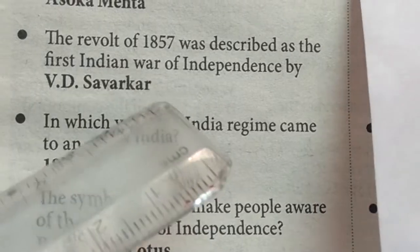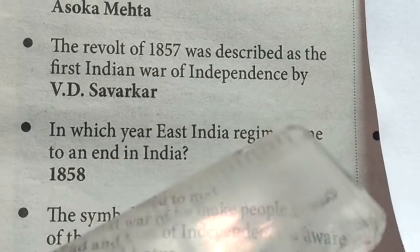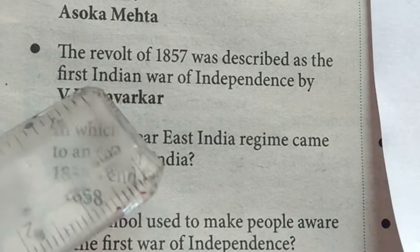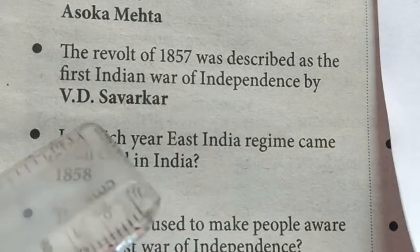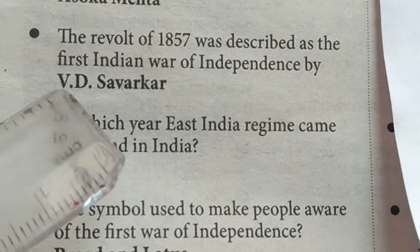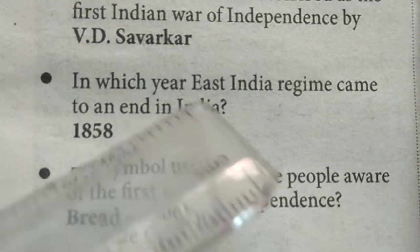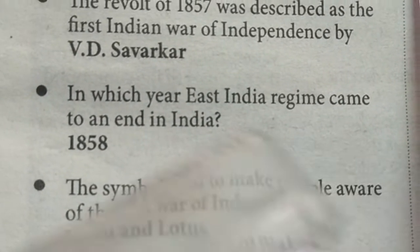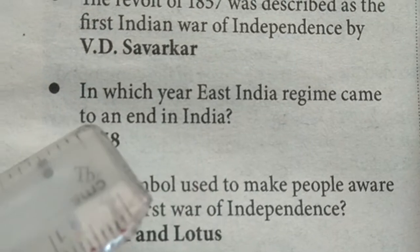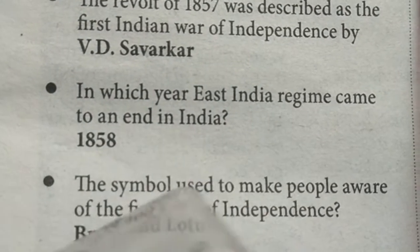The Revolt of 1857 was described as the First Indian War of Independence by V.D. Savarkar. In which year did the East India Company come to an end in India? 1858.